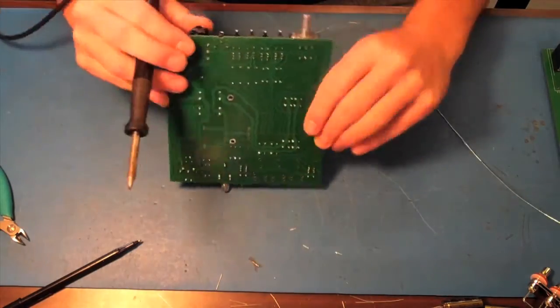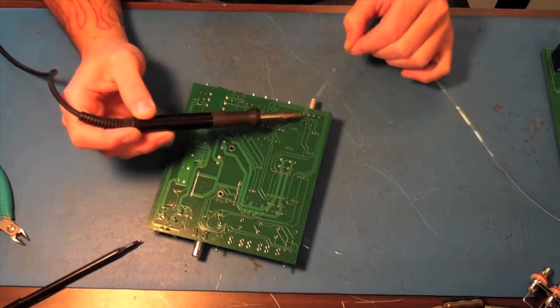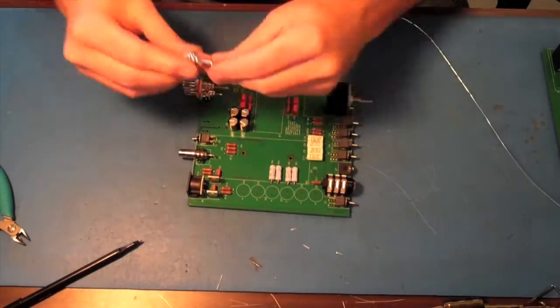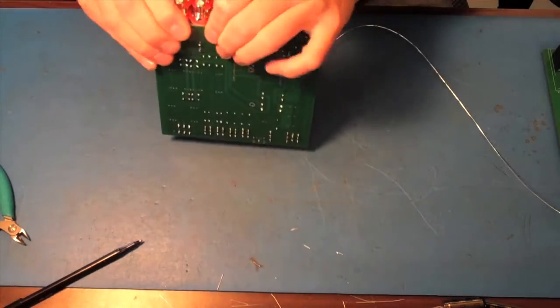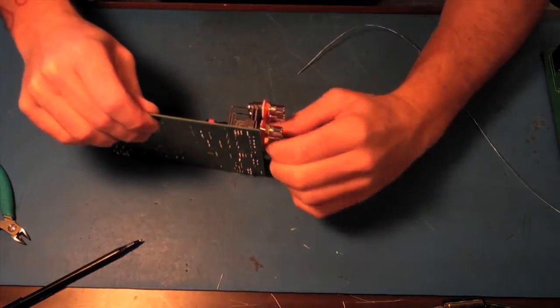There's your volume pot right there, Alps volume pot going in now. The RCA jacks, we use only Cardas jacks too, that is correct. All our jacks are Cardas.